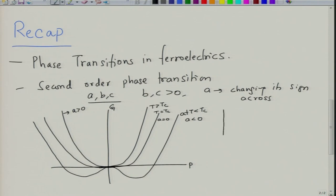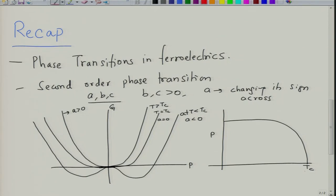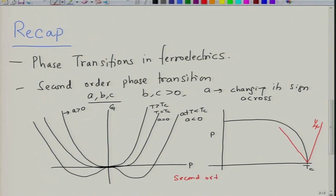This is the second order phase transition. When you plot polarization as a function of temperature, it shows a gradual change up to a temperature Tc. When you plot susceptibility, 1/χ shows different slopes on the two sides of the transition, but there is no abrupt change in polarization or susceptibility at the transition temperature. In the second order, there is no abrupt change in the first derivative of free energy — that is entropy — but the second derivative changes abruptly.